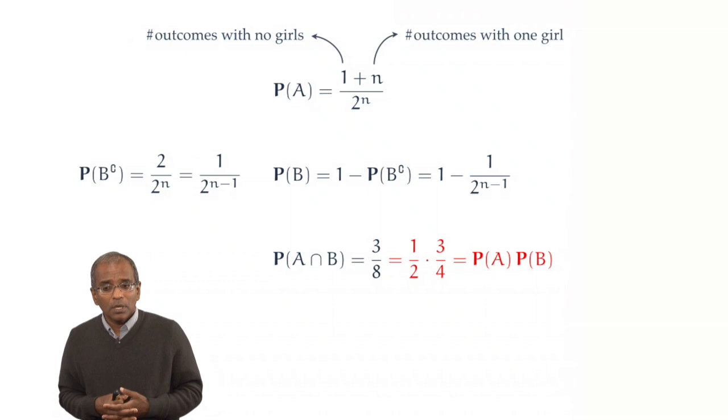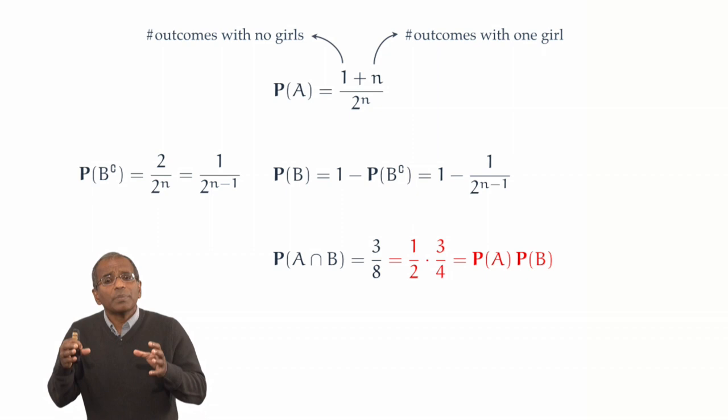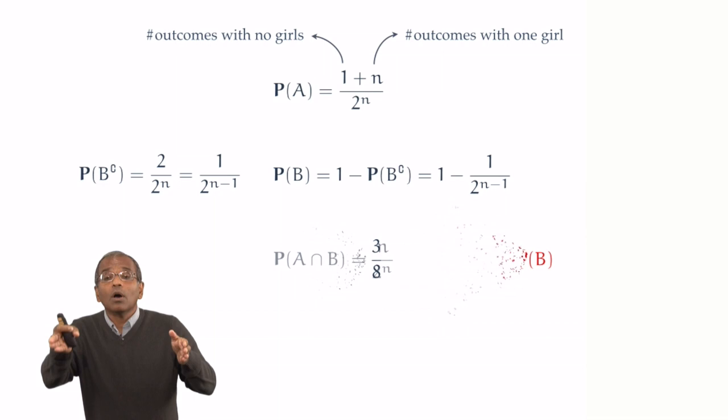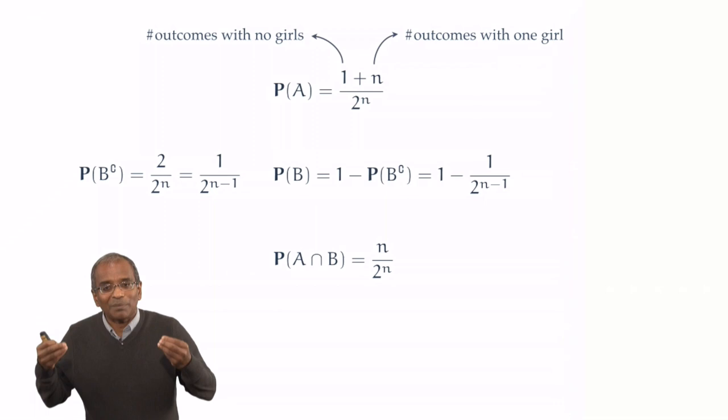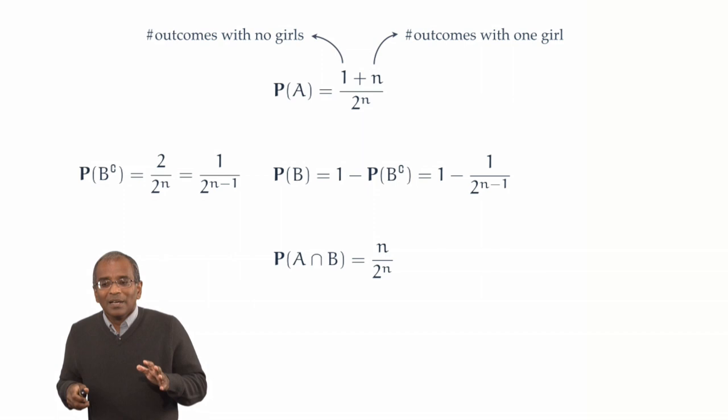Excellent. We now still need to say something about the probability of the intersection. What does A intersection B mean? It means that the family has at most one girl and children of both sexes. In words, that means the family has exactly one girl. But that one girl, as we've seen, can be in any one of n age locations. And therefore, the probability of A intersection B is n over 2 to the power n.